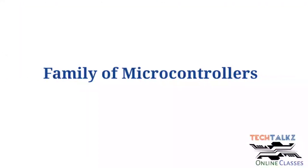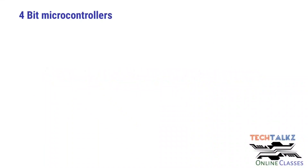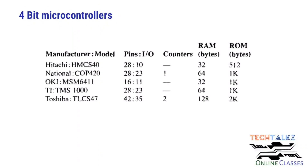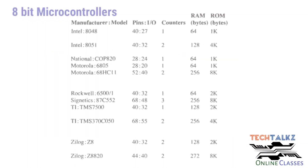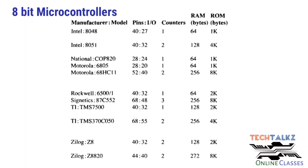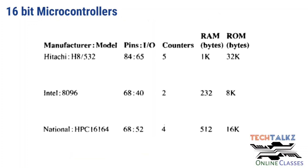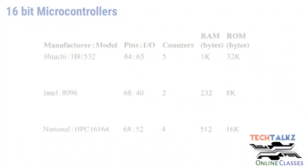There are different types of microcontrollers. There are 8-bit microcontrollers with different RAM and ROM sizes, different counters, and different pin input/output ports. If you have a project, you can select a suitable microcontroller. There are also 16-bit and 32-bit microcontrollers. In our module, we focus on the 8051 microcontroller and its features.